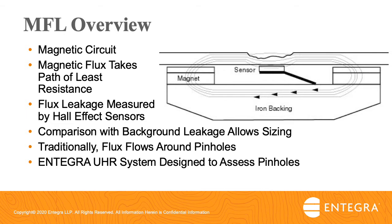As it relates to pinhole assessment, it's important to remember two things. Number one: path of least resistance — flux will always take the path of least resistance and will tend to flow around narrow defects rather than leaking out of the steel material. Number two: magnetic flux leakage assessment involves a volumetric measurement. There must be a sufficient volume of missing metal to distinguish leakage from the background. Integra's sensing matrix was designed such that a pinhole feature as small as 3 mm by 3 mm and only 10% deep should not pass undetected.